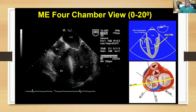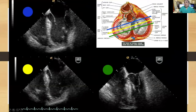The other important view is the four-chamber view, which is a pretty versatile view. From this view, approximately 0 to 20 degrees, we can see multiple segments of coaptation. Very high up we're going to see A1-P1; a little further down we'll see A2-P2; and further down deeper we'll see A3-P3.